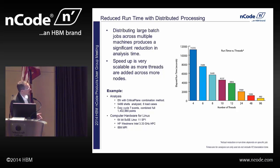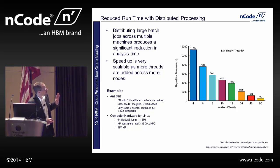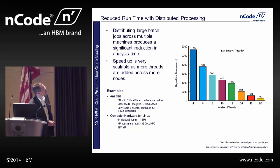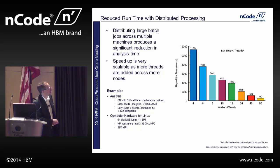How well does distributed processing work? Using multiple threads across multiple nodes of a cluster, we've gone from something over 11,000 seconds on four threads — which is over three hours — down to 482 seconds on 96 threads, which is about eight minutes. We've gone from over three hours to eight minutes just by increasing the number of threads.